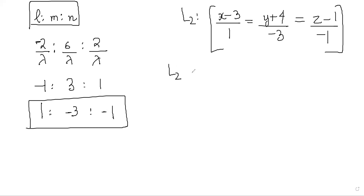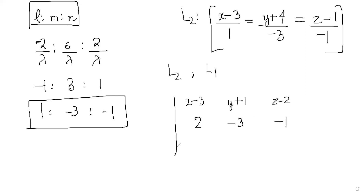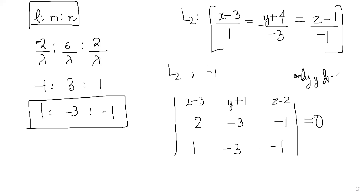Once you know line equation L2, you already know L1. So the plane containing L1 and L2 is straightforward — there is a standard formula for finding the equation of a plane containing two lines. Setting up the determinant with point (x−3, y+1, z−2), direction ratios of L1 (2, −3, −1), and direction ratios of L2 (1, −3, −1) equal to 0, and simplifying, you find only Y and Z terms remain. The equation comes out to be parallel to the YZ plane.